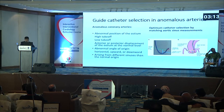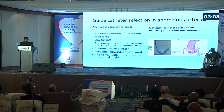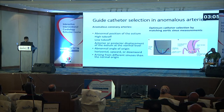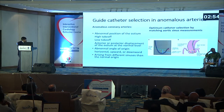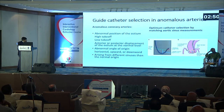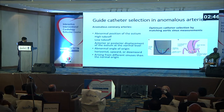We may consider catheter improvisation, because most of the time we may not have the catheter we need to do an angiogram or coronary intervention. We can consider the catheters available on your shelf — the catheter curve, the catheter width, and the angle of the coronary — to choose a catheter from your shelf to perform the angiogram.